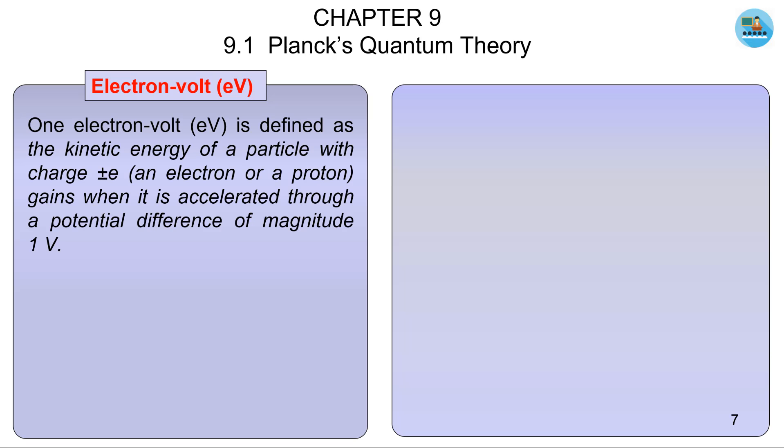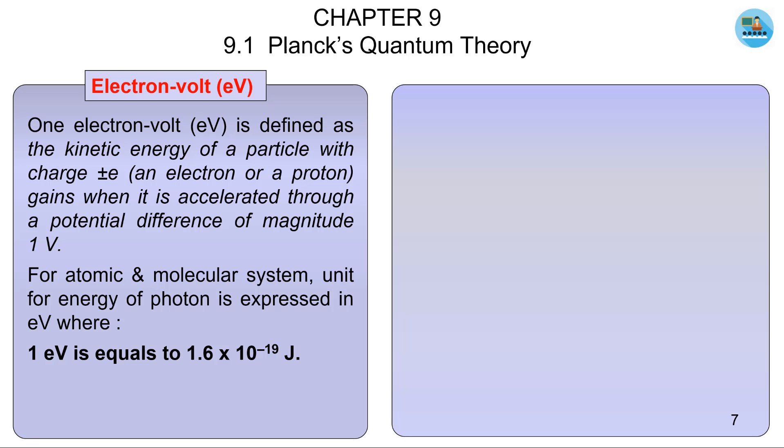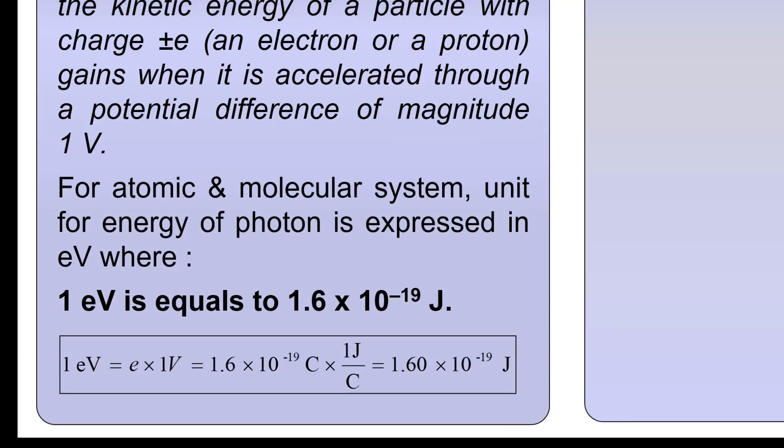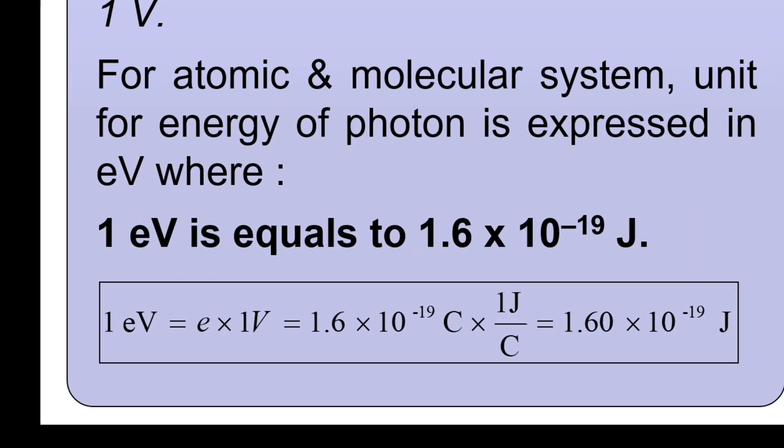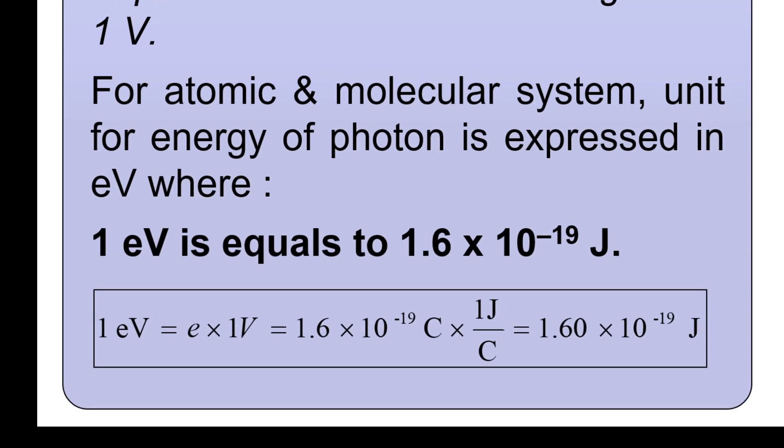Let's take a look at the definition of electron volt. 1 electron volt is defined as the kinetic energy of a particle with a charge of positive or negative gains when it is accelerated through a potential difference of magnitude 1 volt. 1 electron volt is 1 electron charge times 1 volt, where 1 charge is 1.6 to the power of negative 19 coulomb, and 1 volt is 1 joule per coulomb. And that's how we get 1.6 to the power of negative 19 joule.